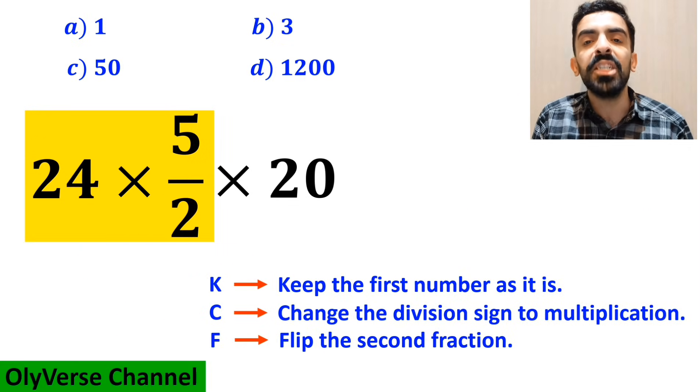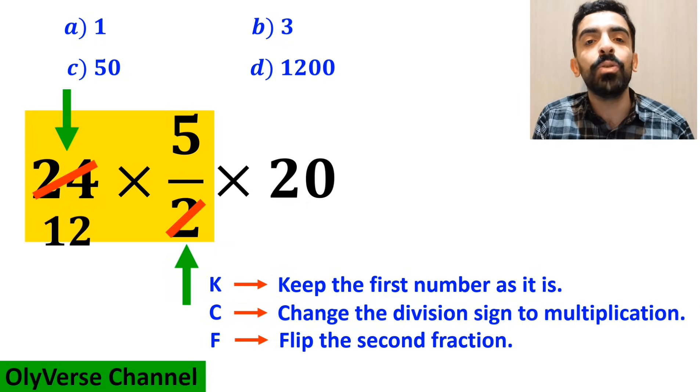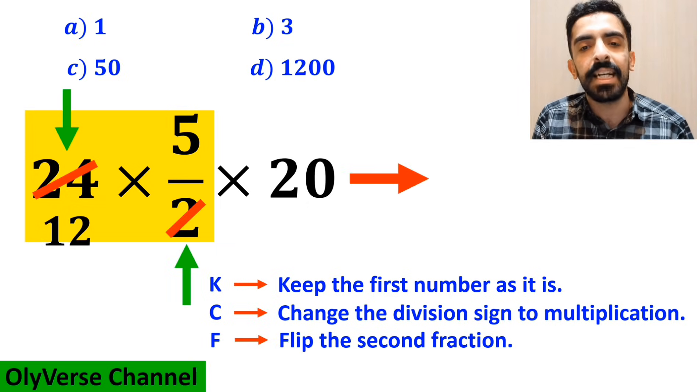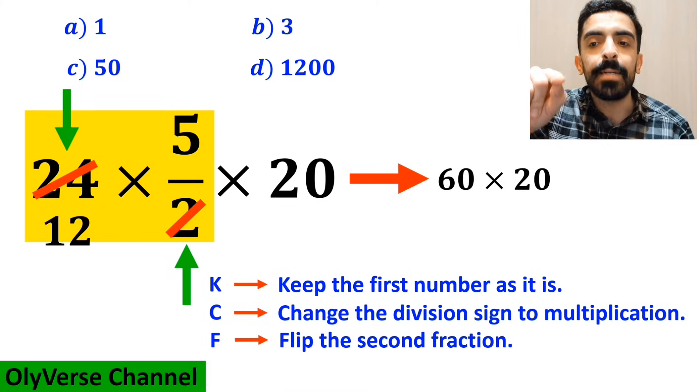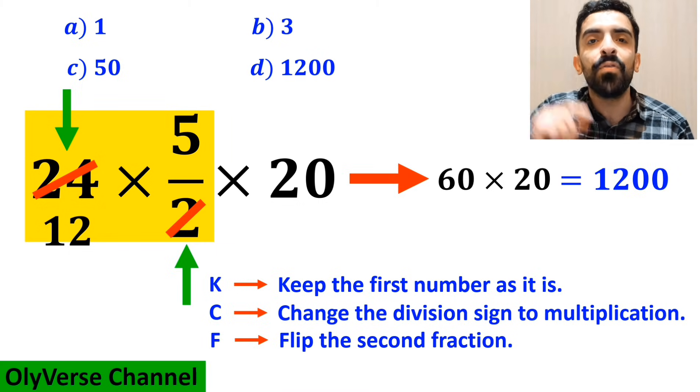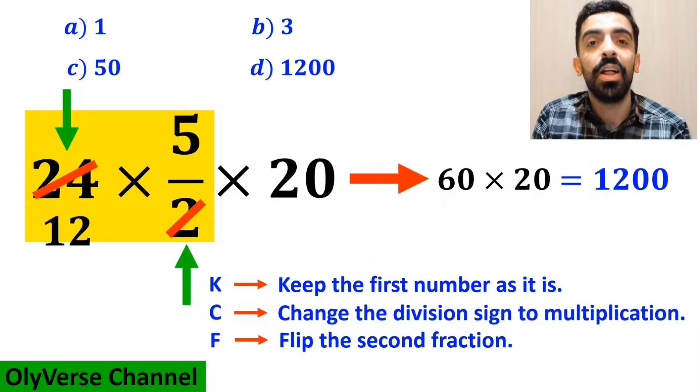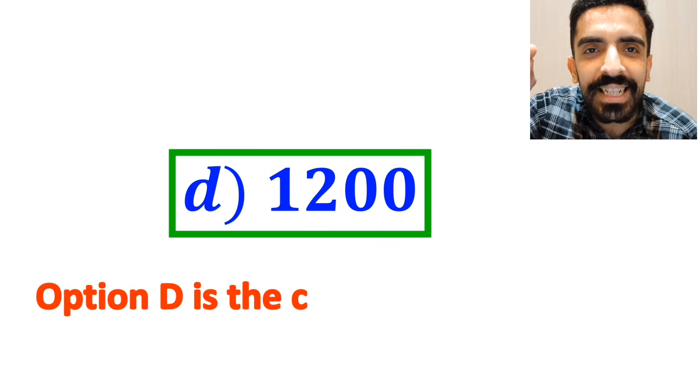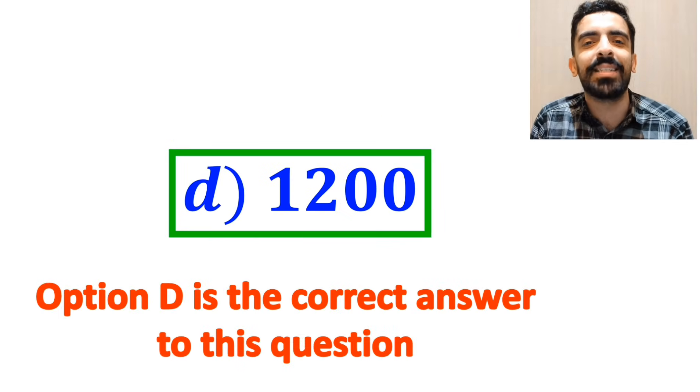So we remove the highlighted part and replace it with 24 × 5/2. Now the number 24 cancels out with the 2 in the denominator, and instead of this expression, we can write 60 × 20, which finally gives us the answer 1200. Therefore, option D is the correct answer to this question.